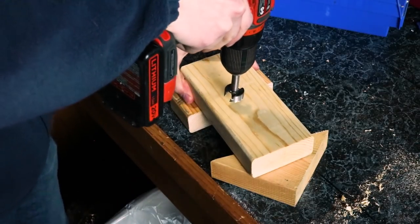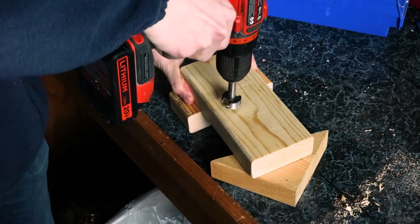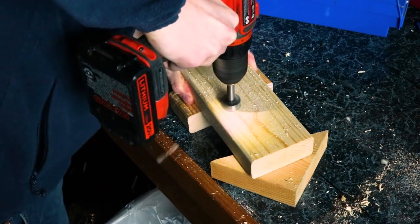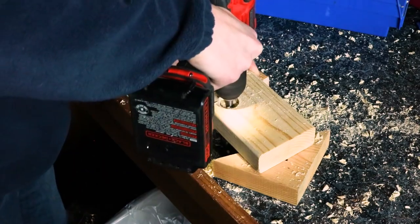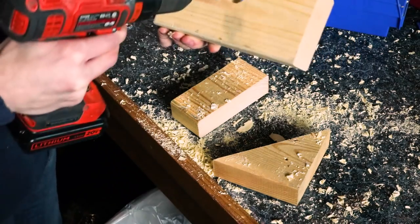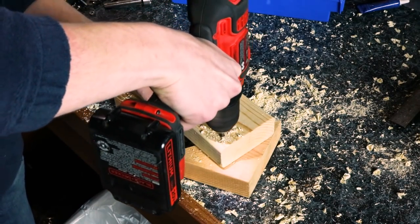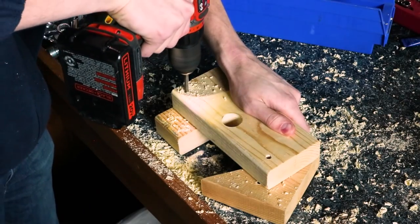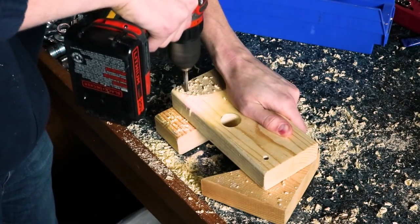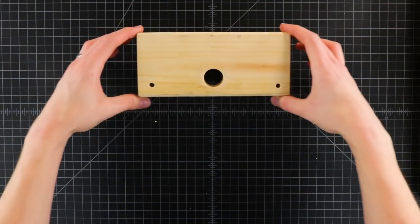With your Forstner bit, find the middle of your board and then move off to one side. After drilling this hole, exchange your bit for the 1/4-inch. And then along the same side, in each corner, you're going to drill a 1/4-inch hole. It looks something like this.